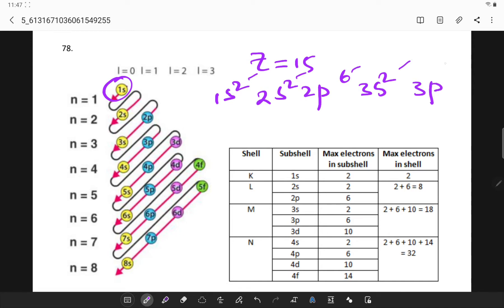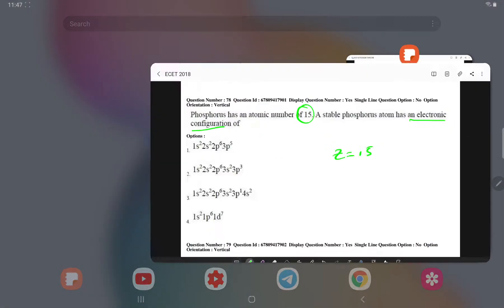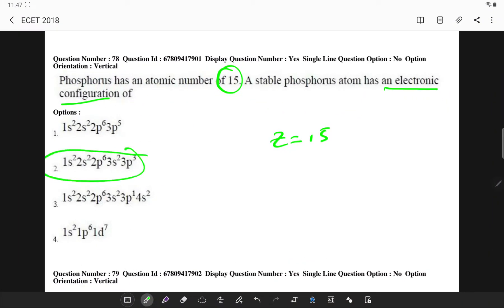I am left with 2, 4, 6, 10, 12. I will be left with 3. So 3p³. And I am stopping here. So the answer here is option number 2.